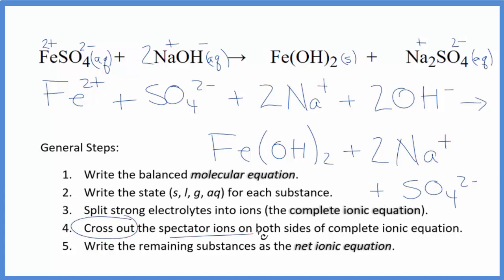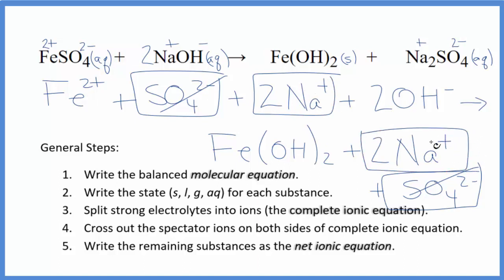So at this point, we can cross out spectator ions. They're on both sides of the complete ionic equation. They haven't changed, so we're not interested in them. I can see in the reactants here, I have this sulfate ion. And in the products, we can cross that out. 2 sodium ions in the reactants. And then in the products here, we have 2 sodium ions. We can get rid of those.